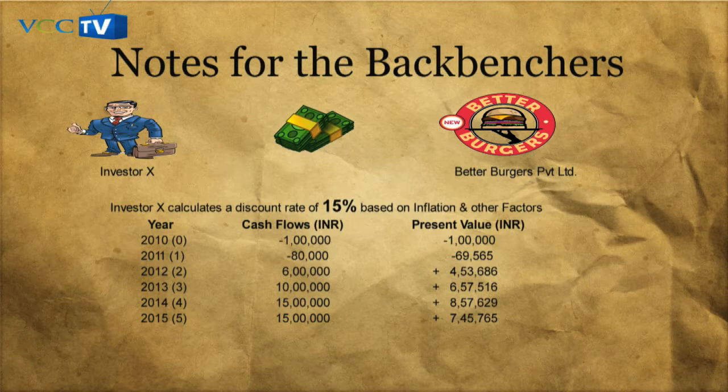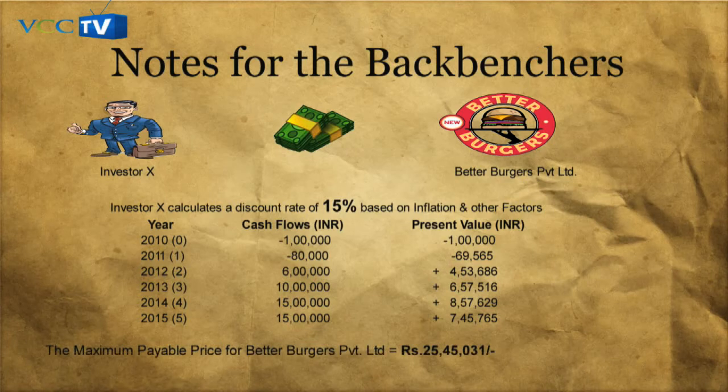In 2010, when Better Burgers was still in debt, the cash flows were in the negative and hence the value of the company was also in the negative. But in 2012, when the food chain broke even and started making profits, the company's value increased to 4.5 lakhs. Considering the company's growth rate, future cash flow projections are also inputted, giving us the value of the company two years in the future in 2015. By adding the values of the company from its inception in 2010 to what it could be valued in 2015, investor X realizes that the maximum payable price for Better Burgers does not exceed a valuation of 25.5 lakhs.